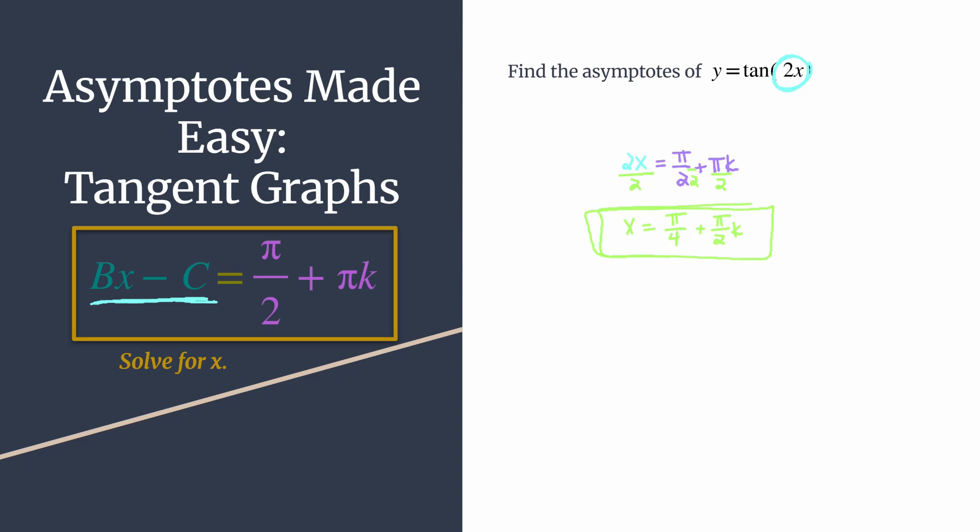This equation will get you all of the asymptotes for your graph. If you want to see how that works, just choose a few different integers for k. I always like to start with k = 0. It's usually a really easy one to find. Plugging in k = 0, of course, that cancels out that second term, and you find that you have an asymptote here at x = π/4.